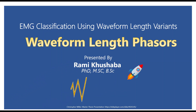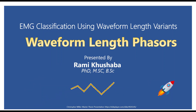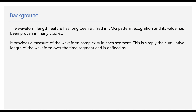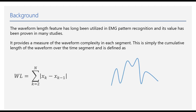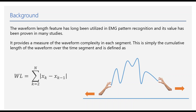Waveform length has been utilized in EMG pattern recognition for a long time — I remember reading about it since Hudgins' 1993 paper titled 'A New Strategy on Multifunction Myoelectric Control.' It provides a measure of waveform complexity in each segment, and is simply denoted as the cumulative length of the waveform over a time segment. The equation is the summation of the absolute value of the difference between consecutive samples. The concept is: hold the two ends of a signal, stretch it out and flatten it, compute the length — that's it, and it proves to be very effective.